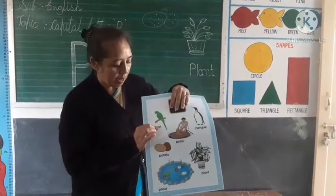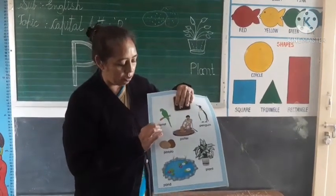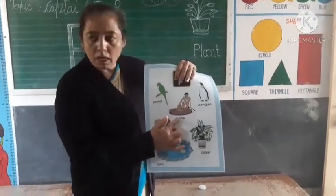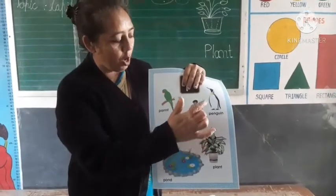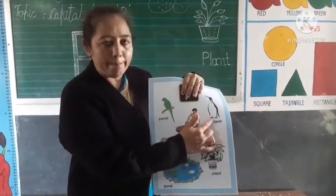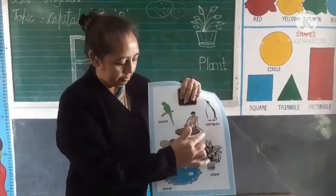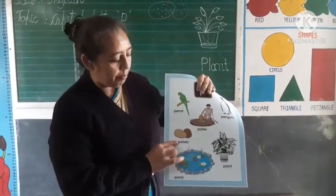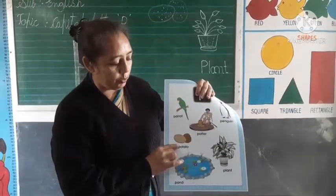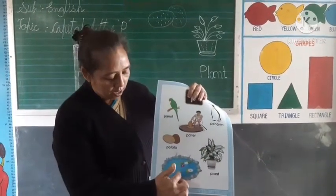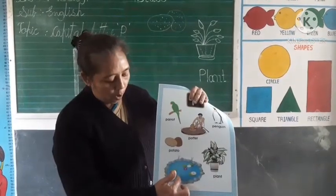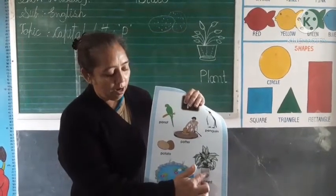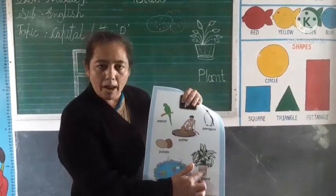P for parol. P for water. P for petrine. P for potato. P for pond. P for plant. P for pillow.